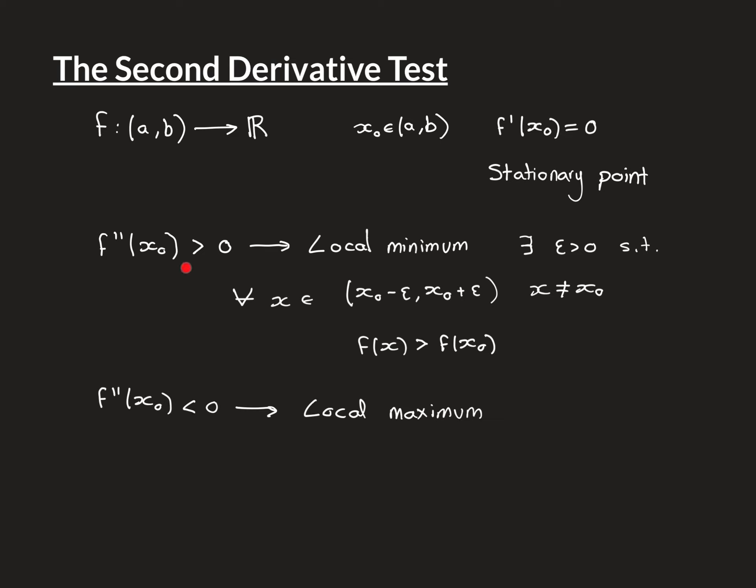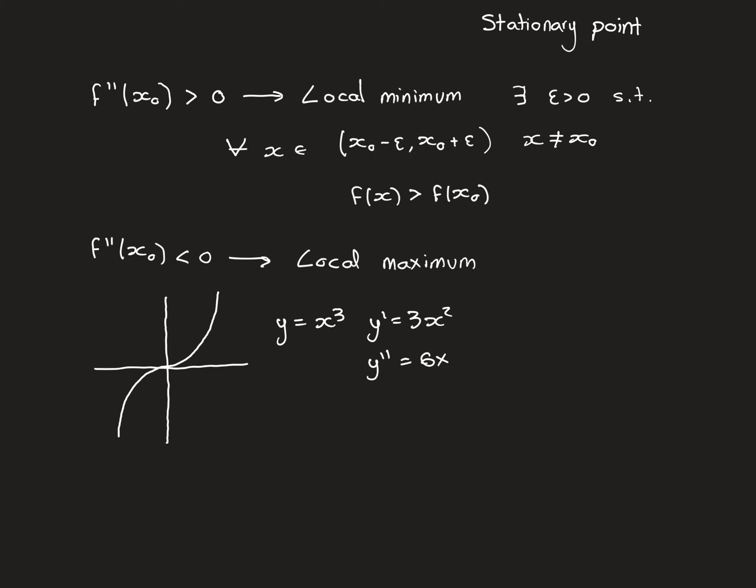If the second derivative at the stationary point exists and is less than 0, you can conclude the opposite: the function has a local maximum at x₀. There exists an epsilon neighbourhood around x₀ such that all other points in that interval are mapped to values less than f(x₀) — x₀ is where the function obtains its maximum in that interval. When the second derivative equals 0, you can't conclude anything, as the following examples show.